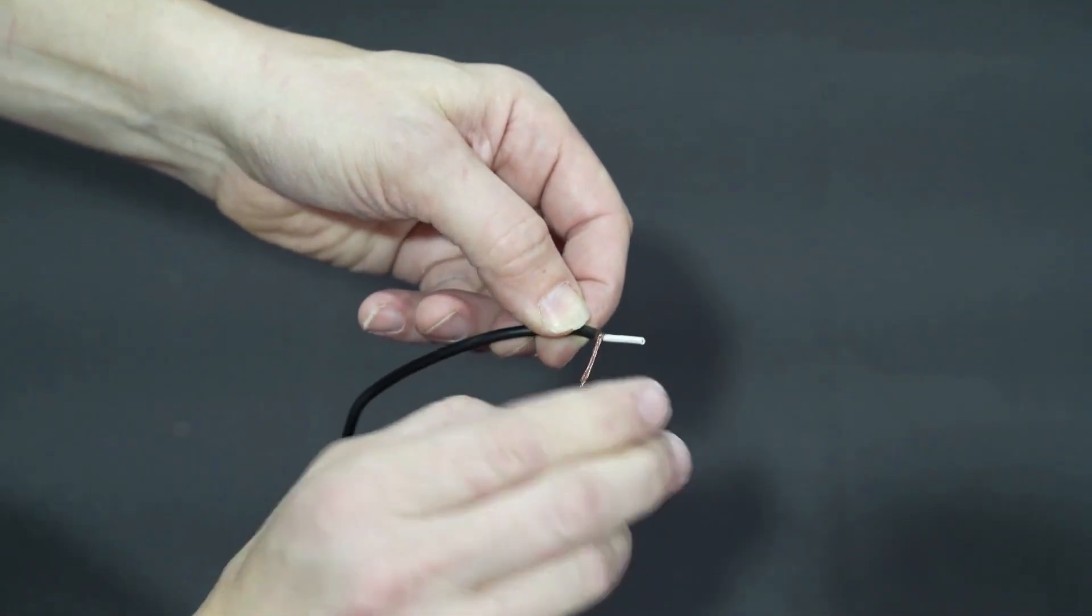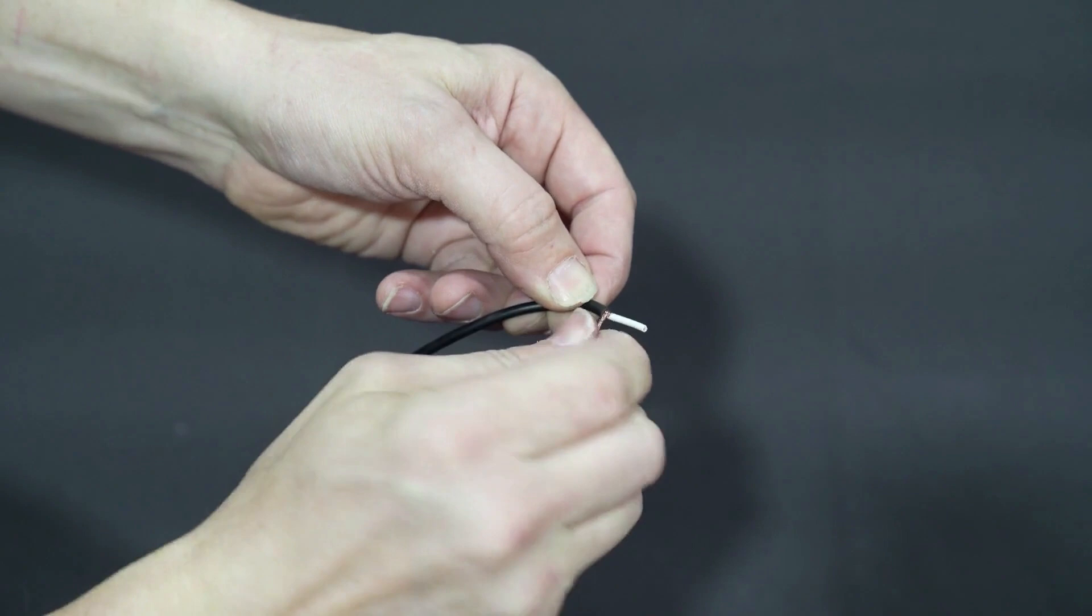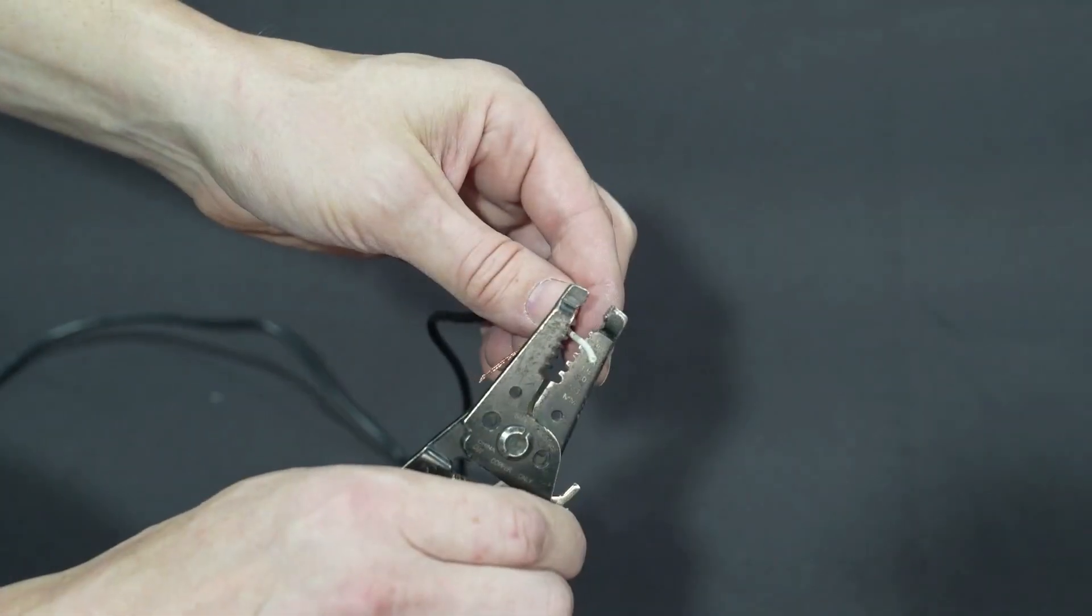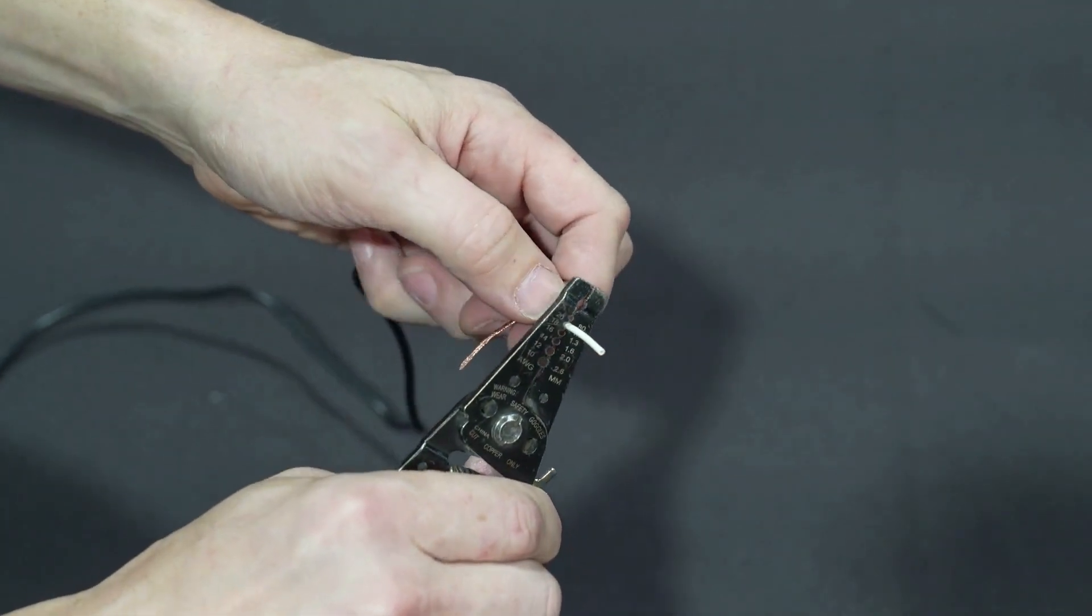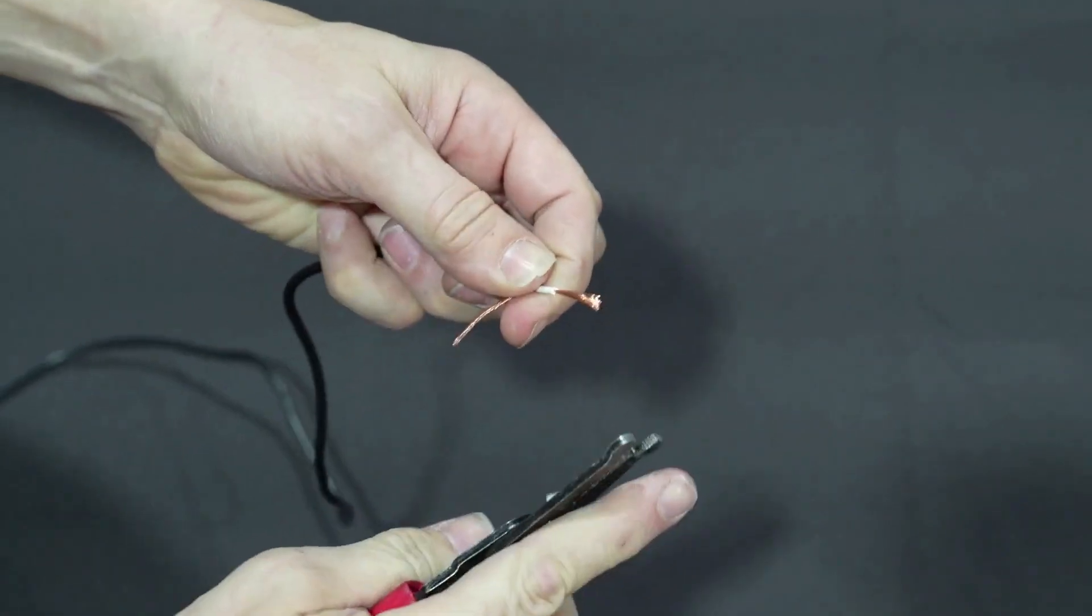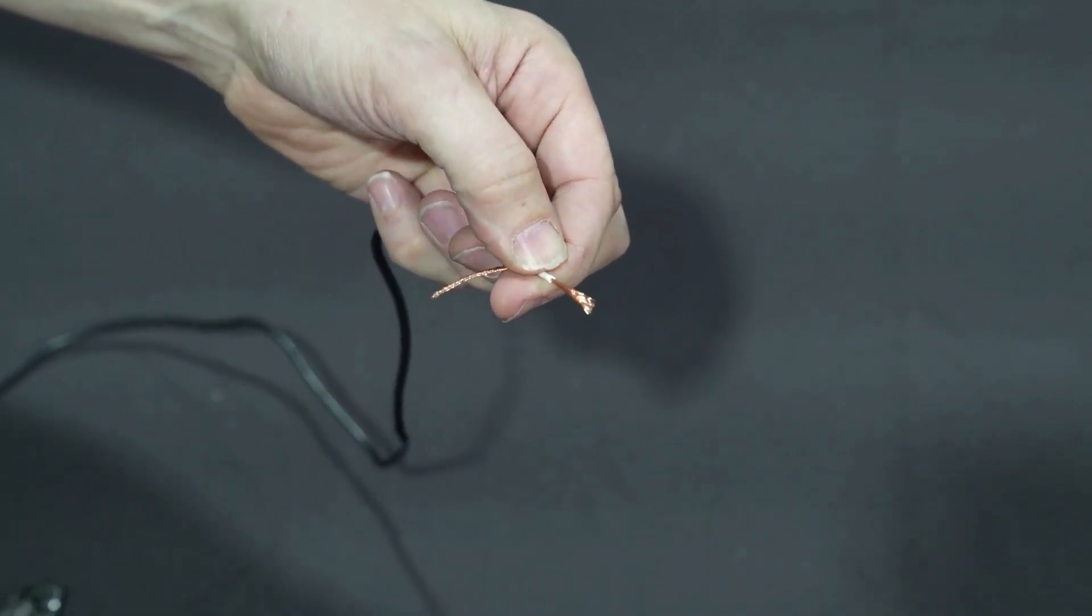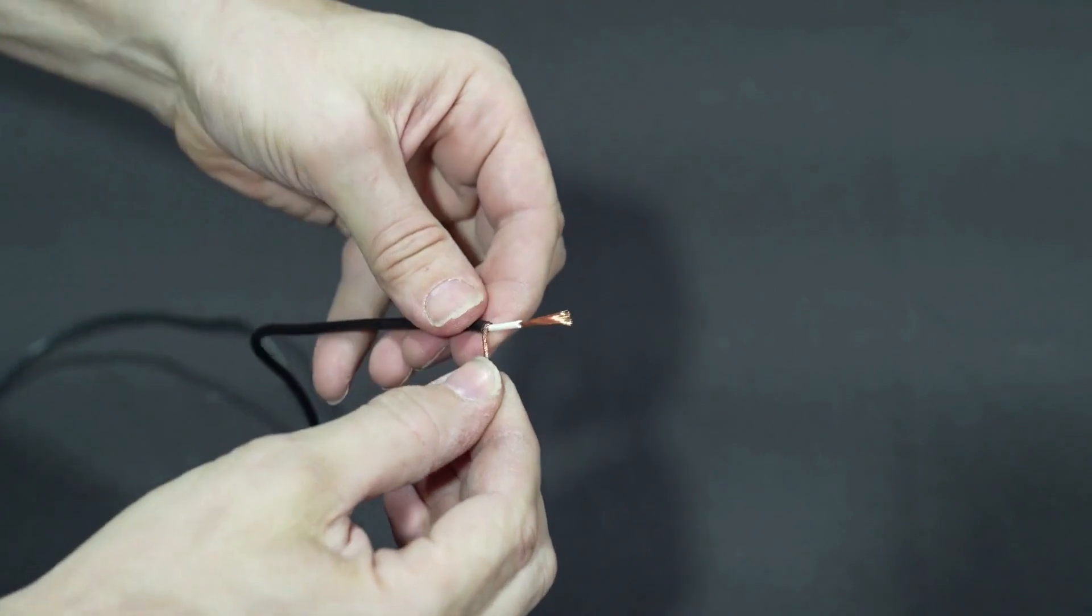Next, carefully twist the outer conductor into itself to make a single unsheathed cable. Now unsheath the inner conductor. To ensure no contact between the conductors, always cut the inner sheath a little bit above the outer sheath.